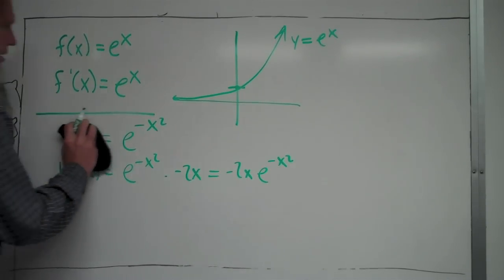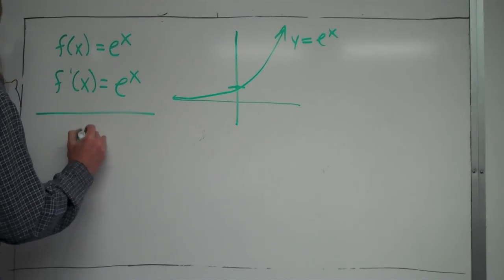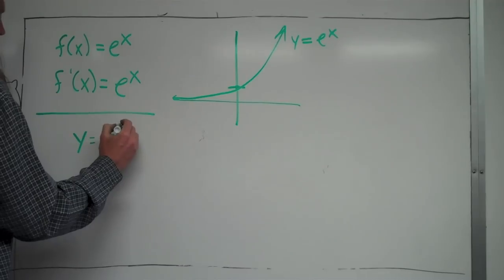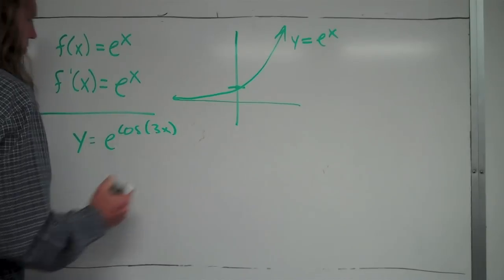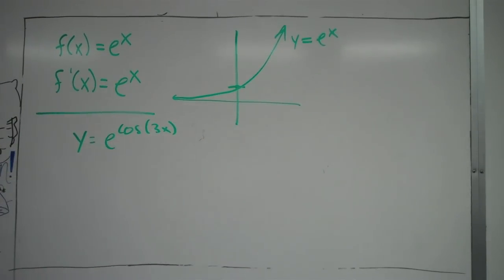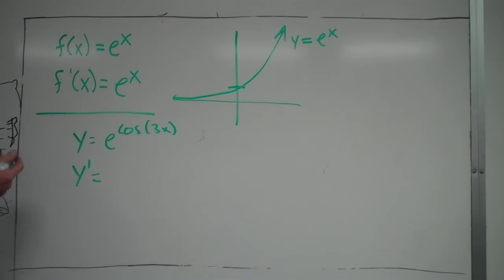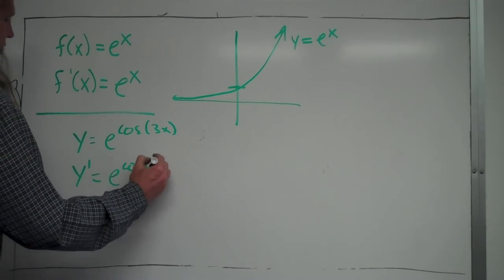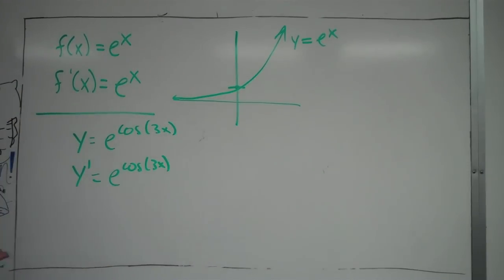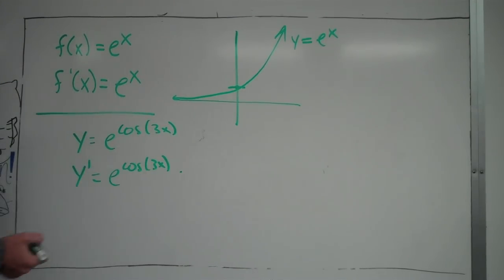Let's look at one more here. Let's say you had y is equal to e to the cosine of 3x. The e is the outer part, so that's what you work with first. To find y prime, the derivative of e to the cosine of 3x is e to the cosine of 3x times the derivative of the inner function. Now for that derivative, I have to use the chain rule again because of the 3x in there, so what I'm multiplying by is the derivative of cosine of 3x.